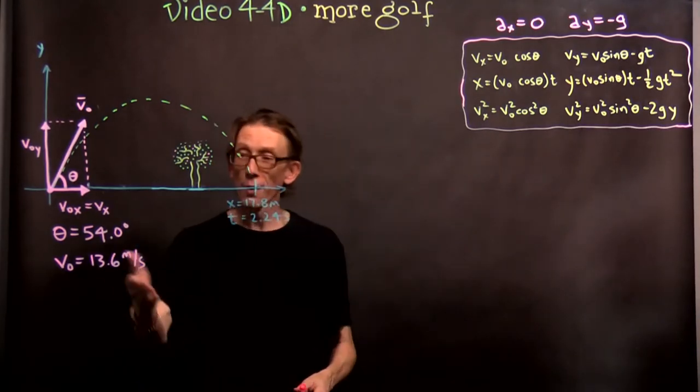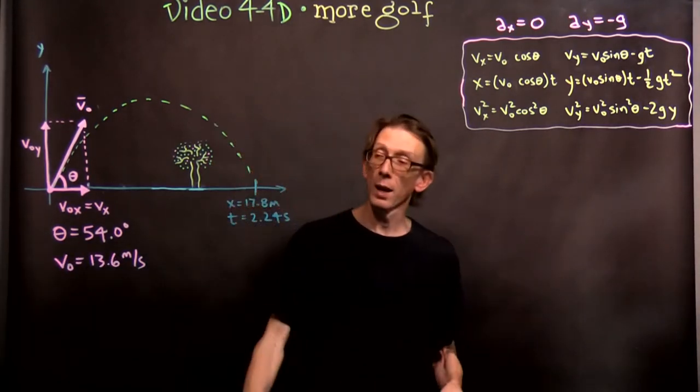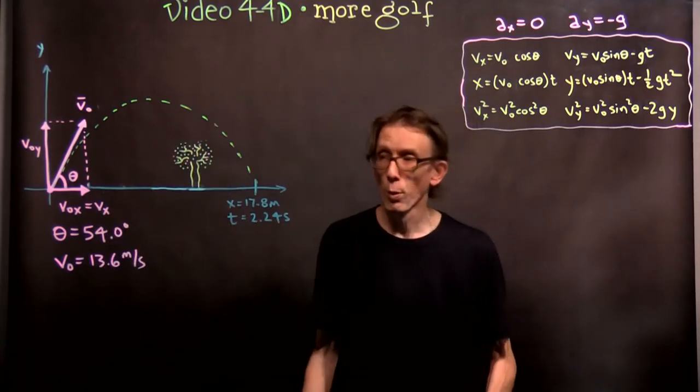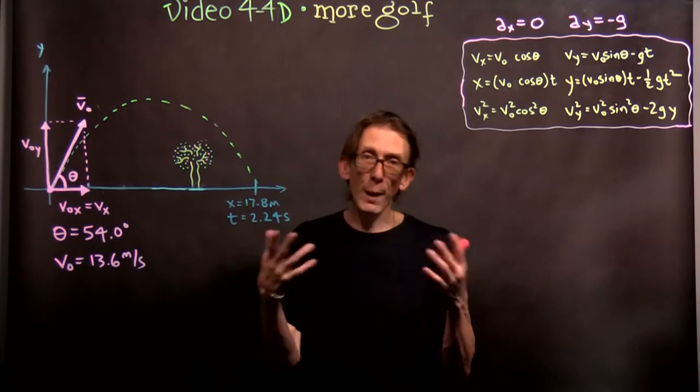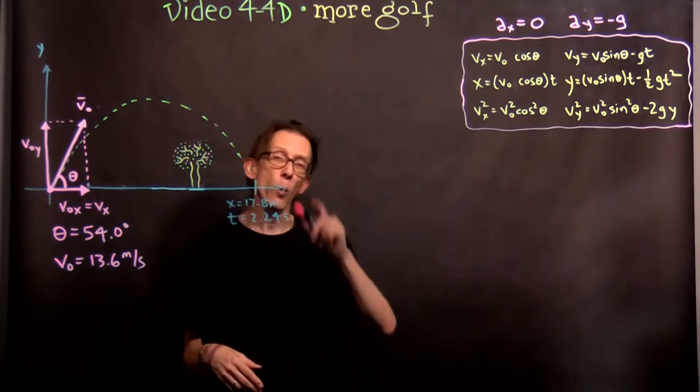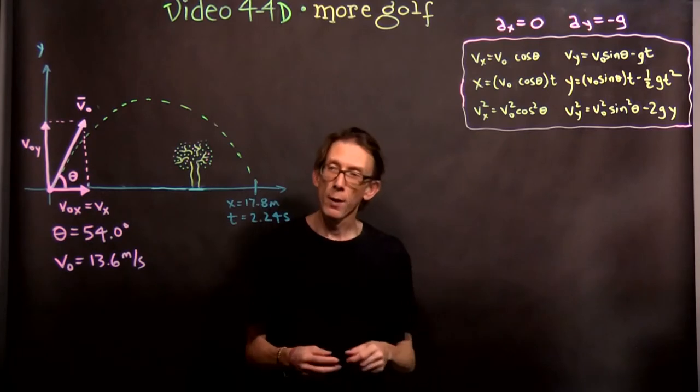We're back to the golf situation. We now know what the initial velocity is. It's 13.6 meters per second at an angle of 54.0 degrees. And we've solved a couple questions about it, but we're going to ask two more questions about it in video 4-4D.